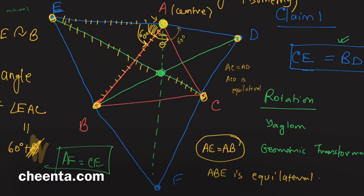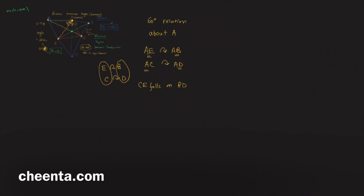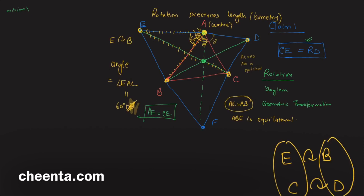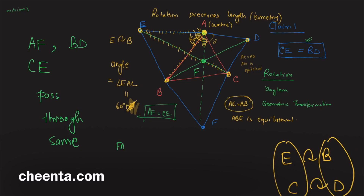In the next video we will show that all three lines — AF, CE, and BD — actually pass through the same point. Can you show this? It's not hard. That point is our desired Fermat point: the point that makes FA plus FB plus FC minimal. We will need to use some angle chasing to show that AF, BD, and CE are concurrent.